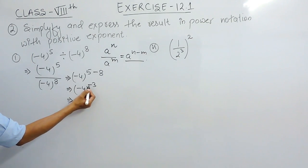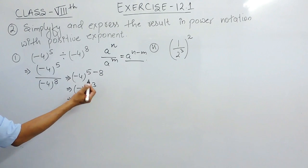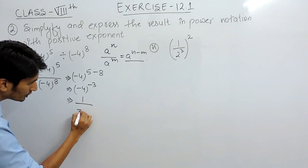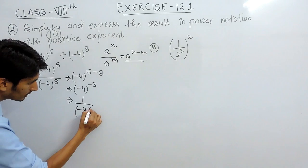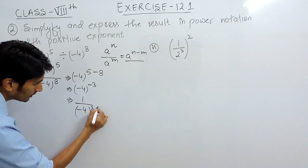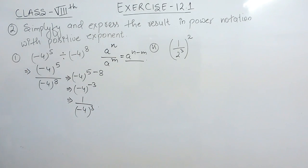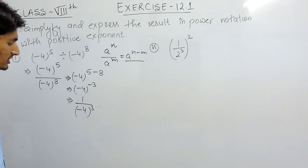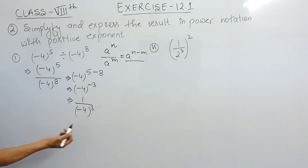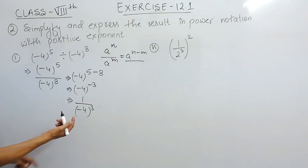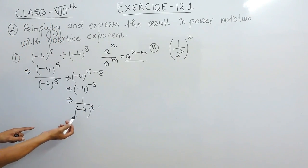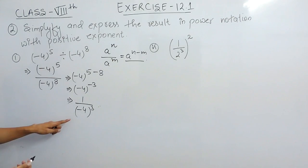We know that if there is a negative power, to convert it into positive, we shift the whole number to the denominator. This is how we solve the first part and this should be the answer. Because we have to write it in power notation, there is no need to further simplify.